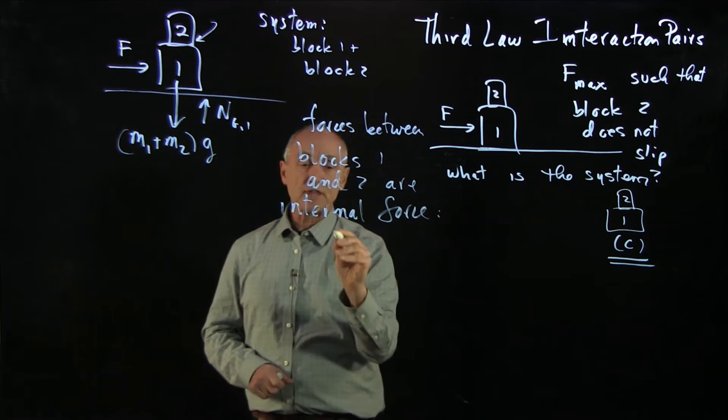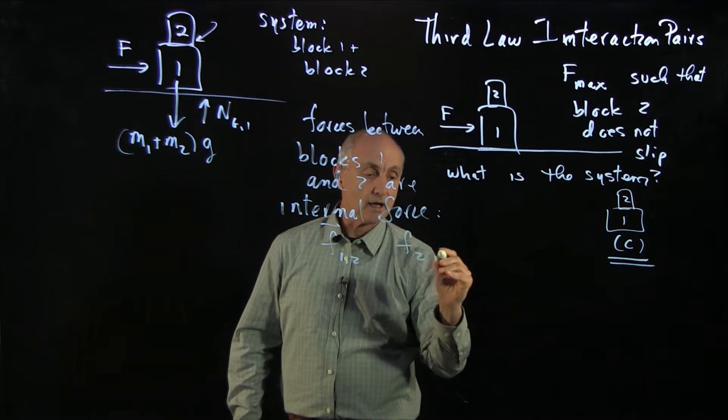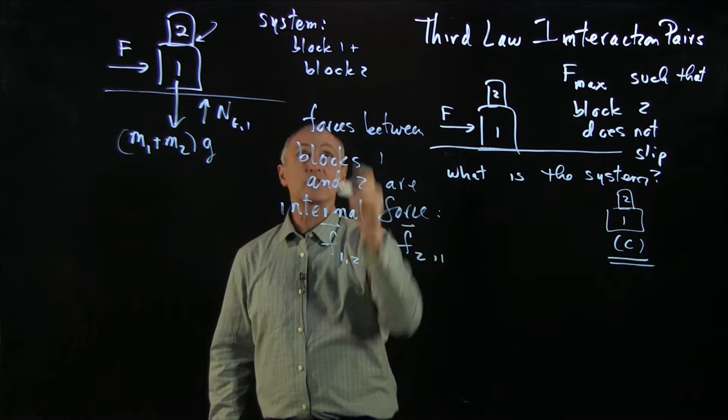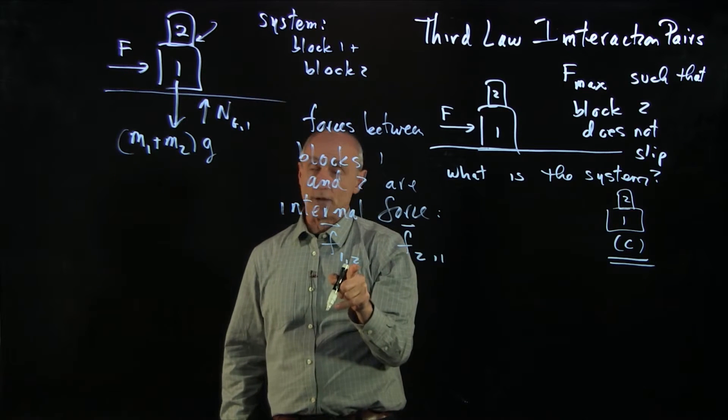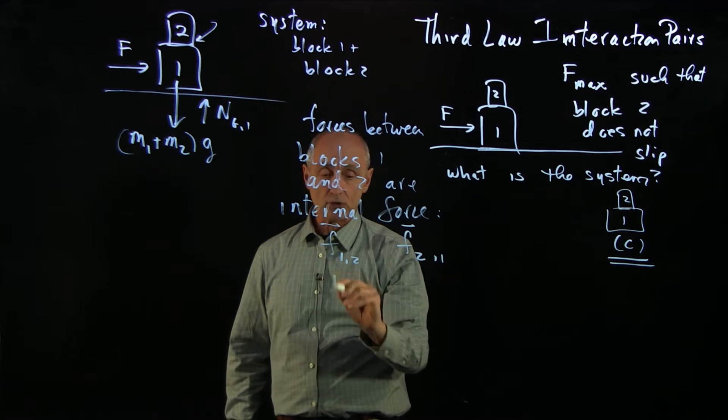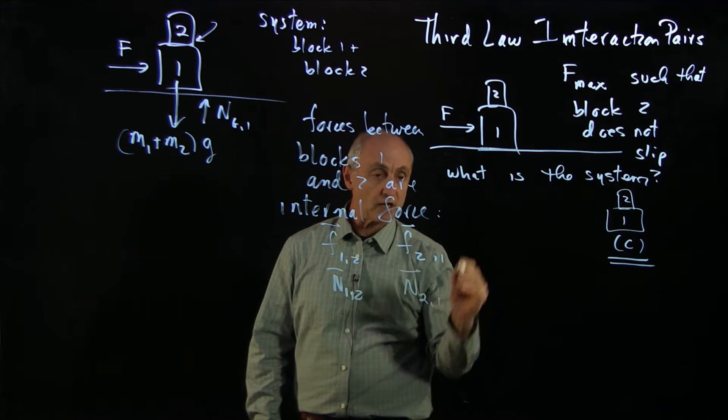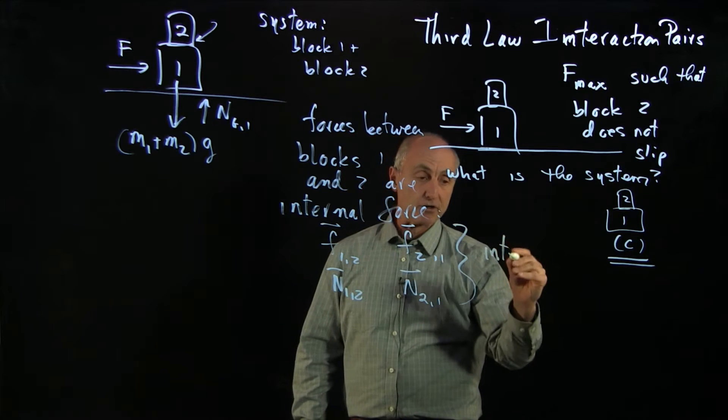And we saw that they were friction forces, F1,2 and F2,1. This was the friction force between the two blocks on block two due to one and the friction force on block one due to two. There were normal forces between these two blocks. But these are interaction pairs.